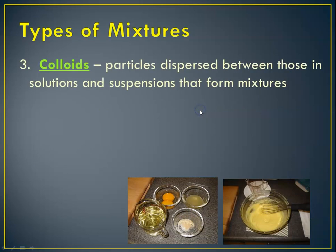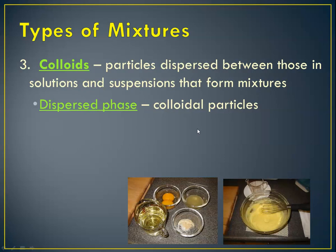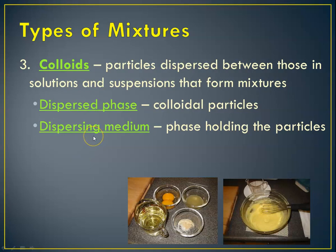And so the third type is a colloid. Colloids—the particle sizes are between the other two. So solution is on the order of 10 to the minus 9. Colloids are in between, so they're greater than one nanometer in size but less than 100 nanometers. Because the particles are intermediate, they stay dispersed. They have a so-called dispersed phase of these particles, and then there's still a dispersing medium, which is the phase that holds the particles.